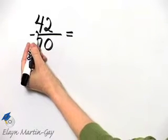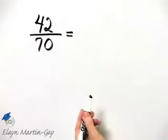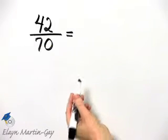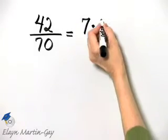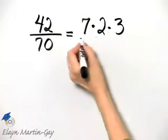So let's write down the prime factorization of 42. I know 42 is 7 times 6. 6 is not prime, but I can write 6 as 2 times 3.